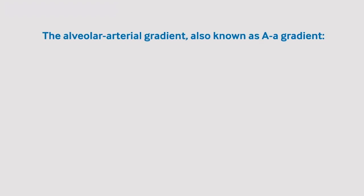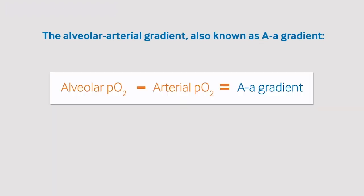The alveolar arterial gradient, also known as the AA gradient, is the difference between the oxygen at the level of the alveolus and the oxygen level in the blood. It can be calculated by simply taking the alveolar partial pressure of oxygen and subtracting the arterial PO2.